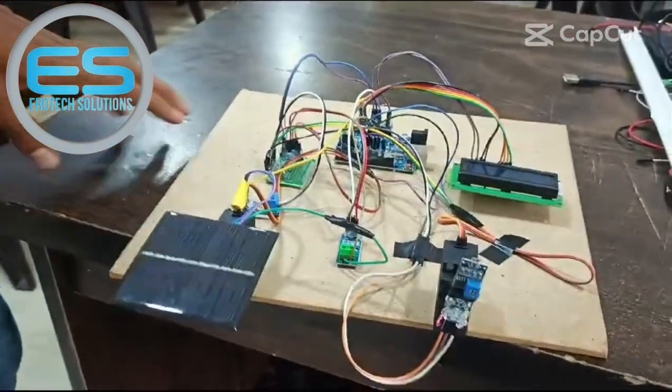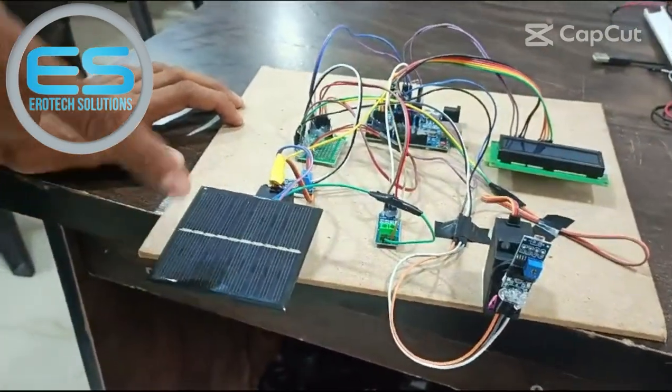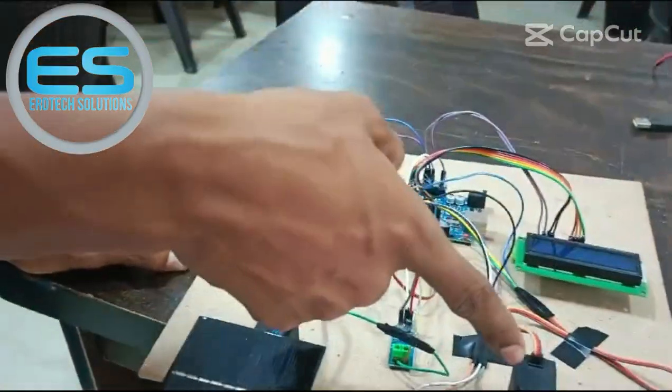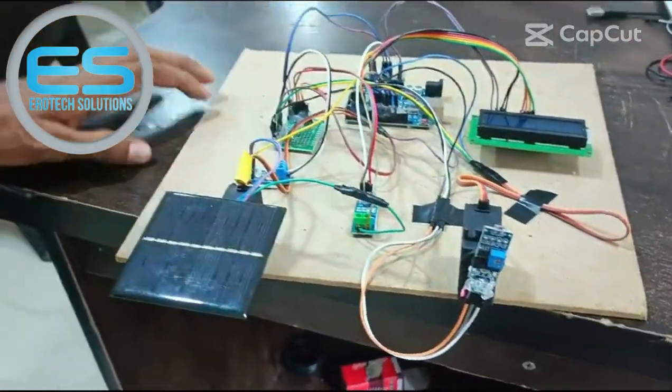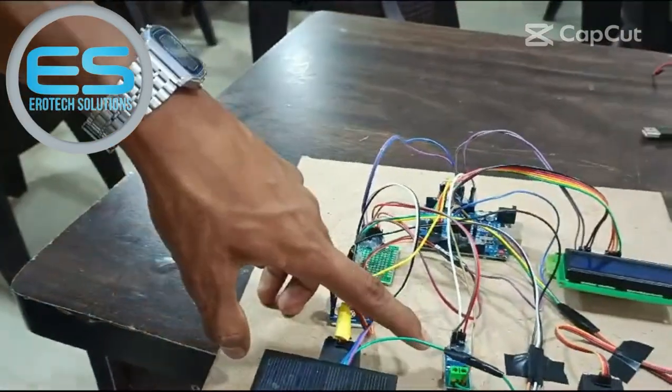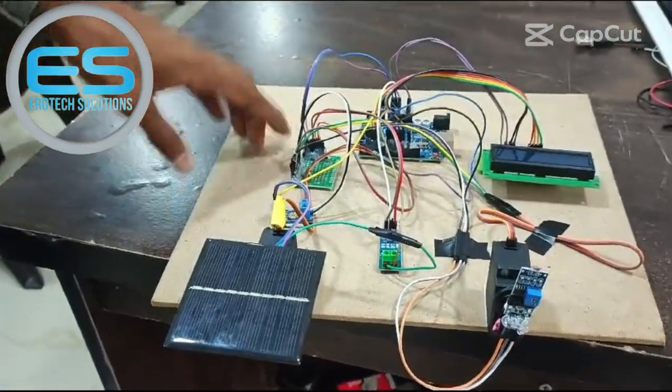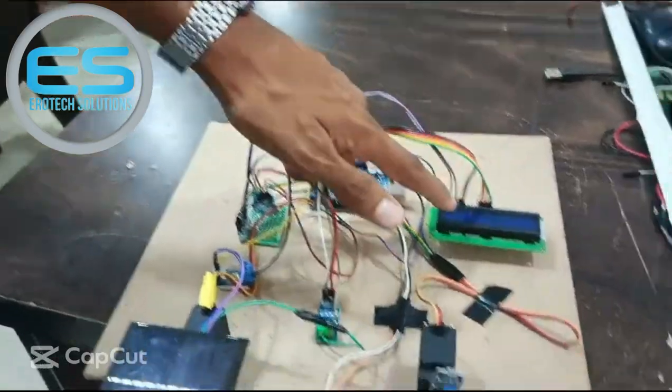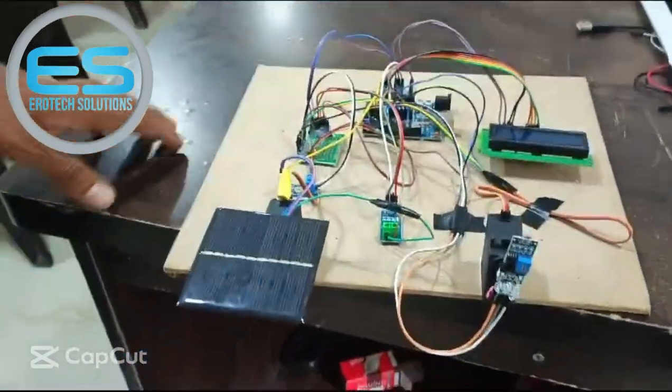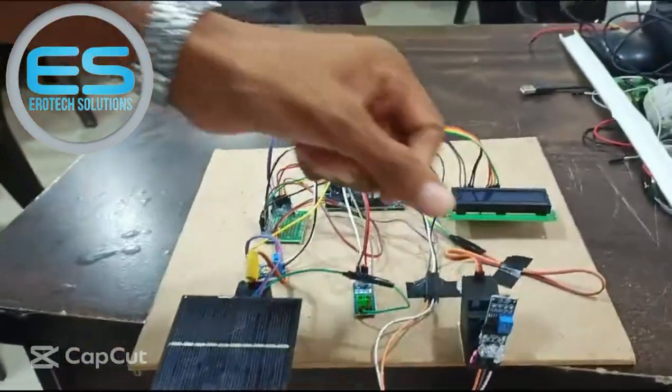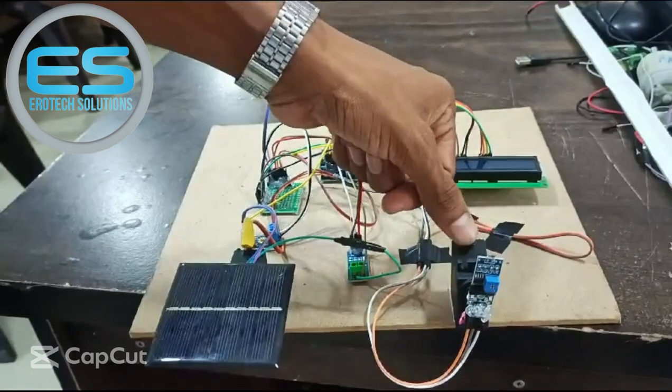The components we used are: 5W solar panel system, 2 servo motors, 1 LDR sensor, 1 voltage sensor and 1 current sensor, power extension board, 1 Arduino board, and 16x2 LCD display. The LDR sensor is connected to the servo motor.